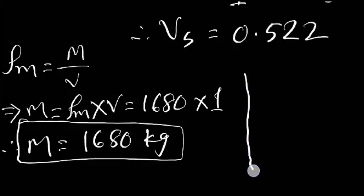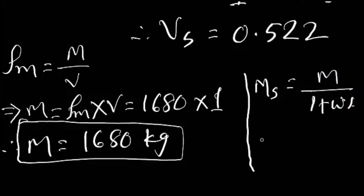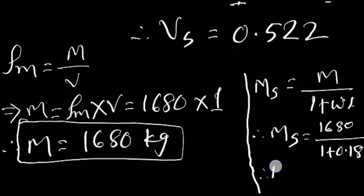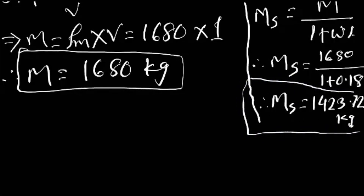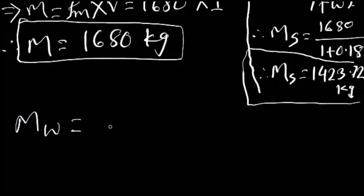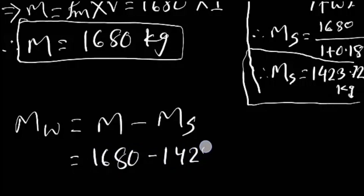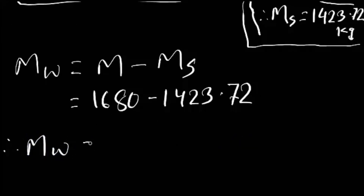We know solid mass equals total mass over 1 plus moisture content, so solid mass equals 1680 over 1 plus 0.18, which equals 1423.72 kg. Current water mass equals total mass minus solid mass, which is 1680 minus 1423.72, giving water mass equals 256.27 kg.